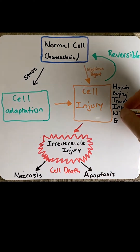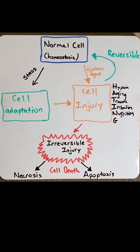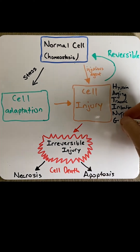N would be nutrition or lack of nutrition. Particularly, a lack of enough proteins or certain vitamins will lead to cell injury. And finally, G is for genetic.